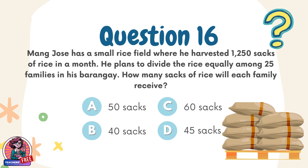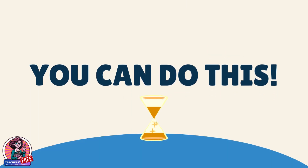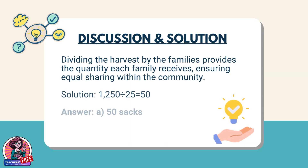Question 16. Mang Jose has a small rice field where he harvested 1,250 sacks of rice in a month. He plans to divide the rice equally among 25 families in his barangay. How many sacks of rice will each family receive? Choices: A. 50 sacks, B. 40 sacks, C. 60 sacks, D. 45 sacks. Discussion: Dividing the harvest by the families provides the quantity each family receives, ensuring equal sharing within the community. Solution: 1,250 ÷ 25 = 50. Answer: A. 50 sacks.